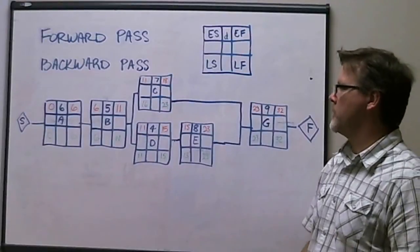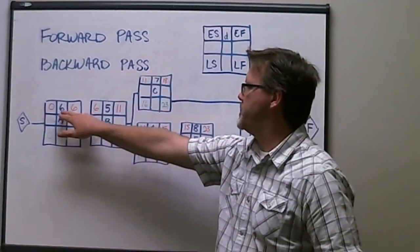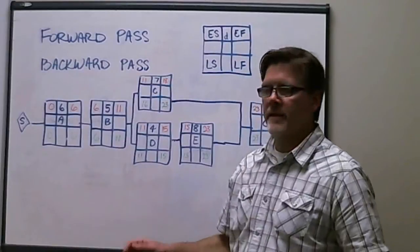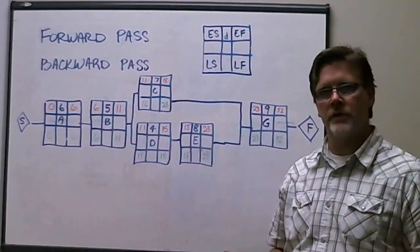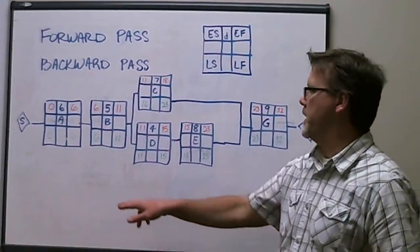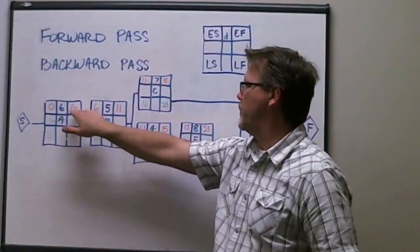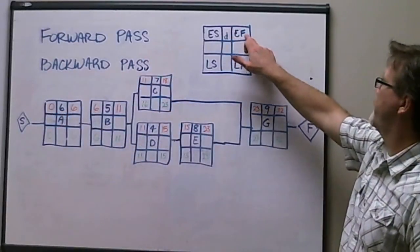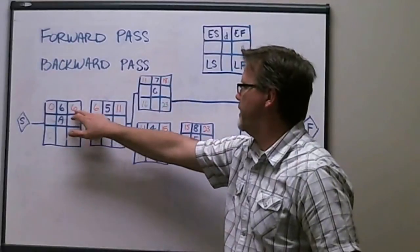As you can see, starting with zero, and for activity A, I have a duration six. The math is really simple here, as we go through and do our network, is that we add six to zero, and we have an early finish for activity A of day six.